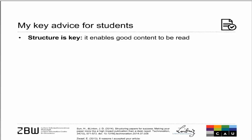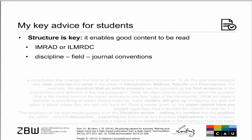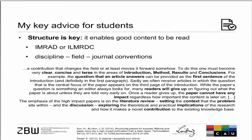The second advice is structure, which is very important in papers. Structure is what people will see first and what helps readers navigate your article and follow your argumentation. Commonly, you can use the IMRAD structure — Introduction, Methods, Results, and Discussion — or the longer version which adds Literature Review and Conclusion. All papers you read will have some kind of structure like that. You should align your structure to your discipline, field, or the journal's conventions.